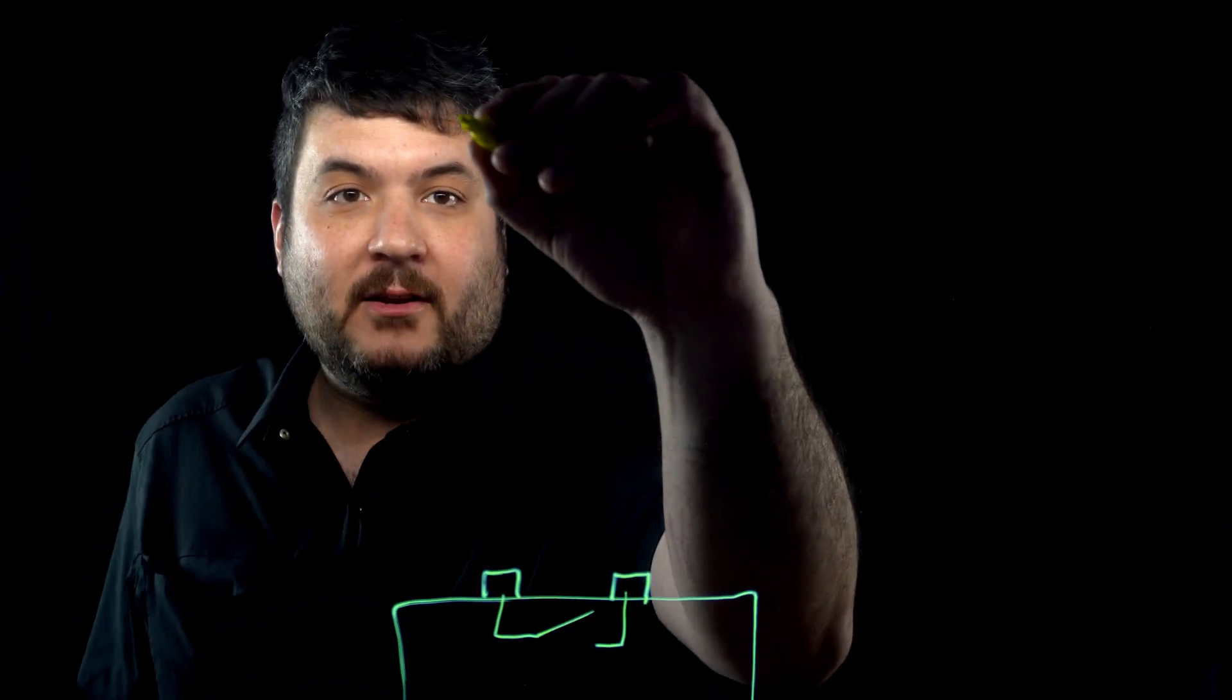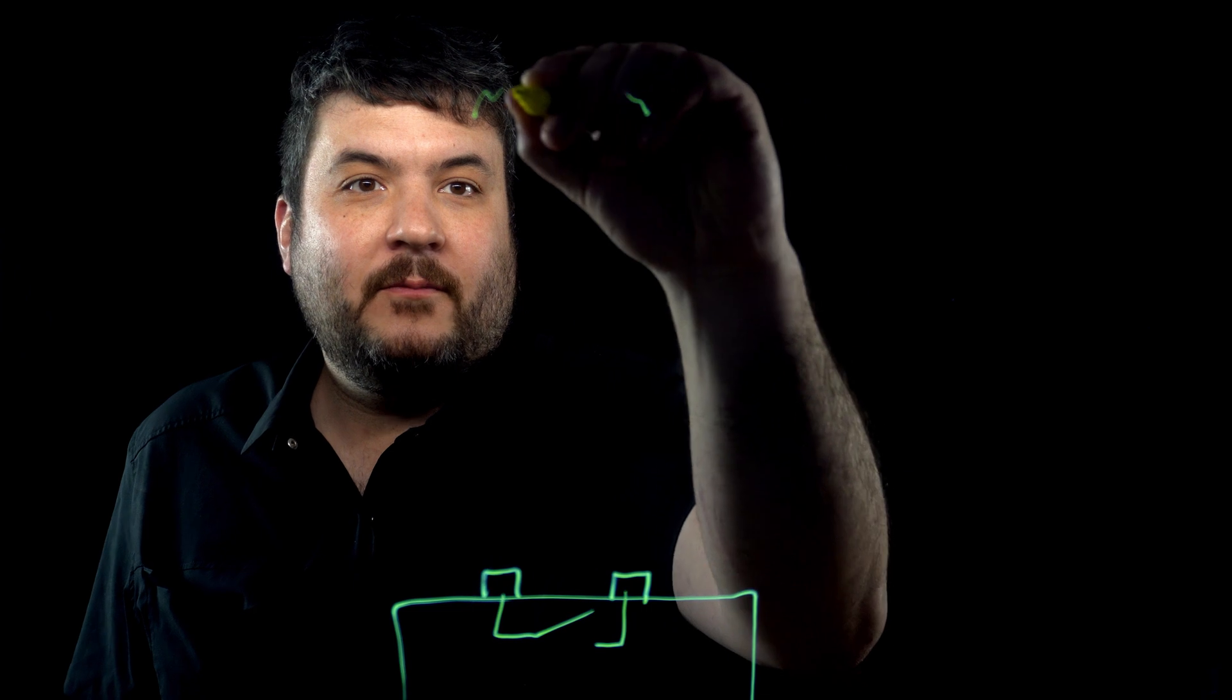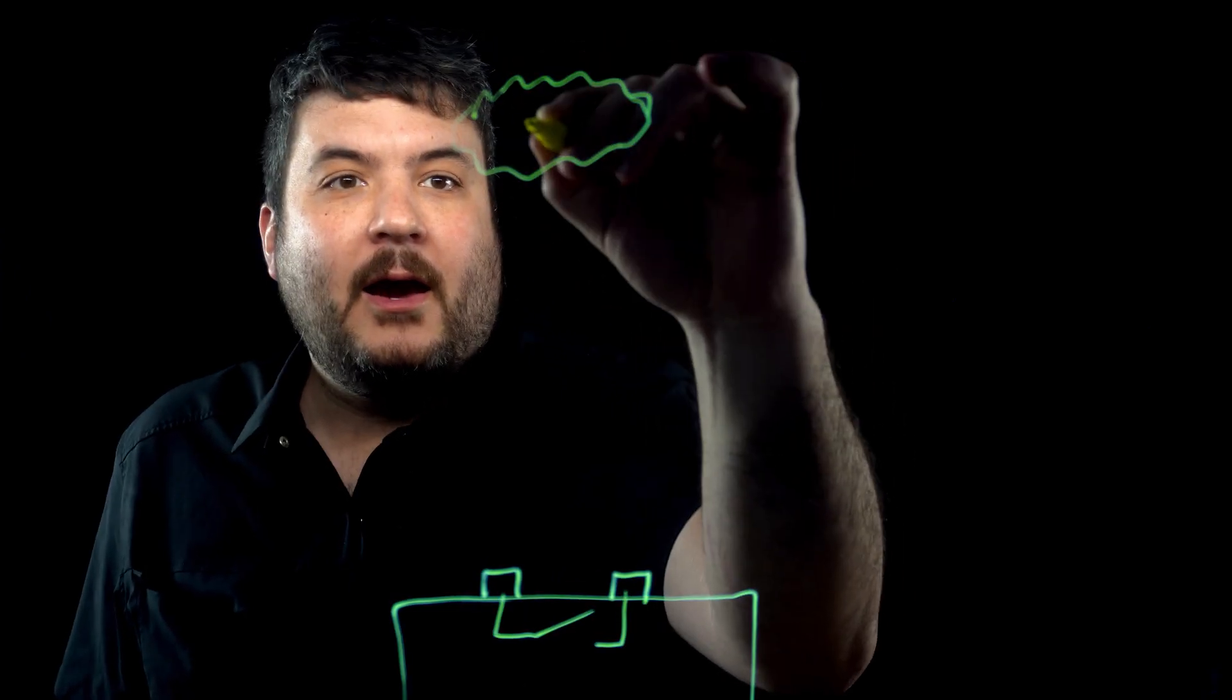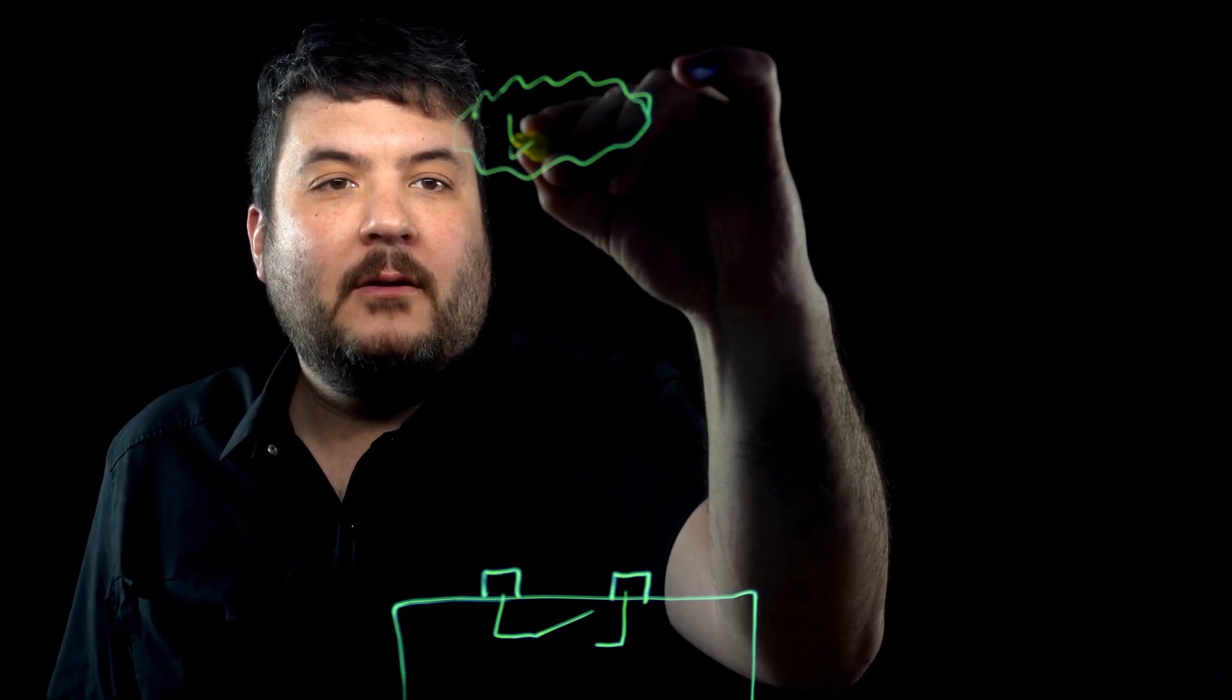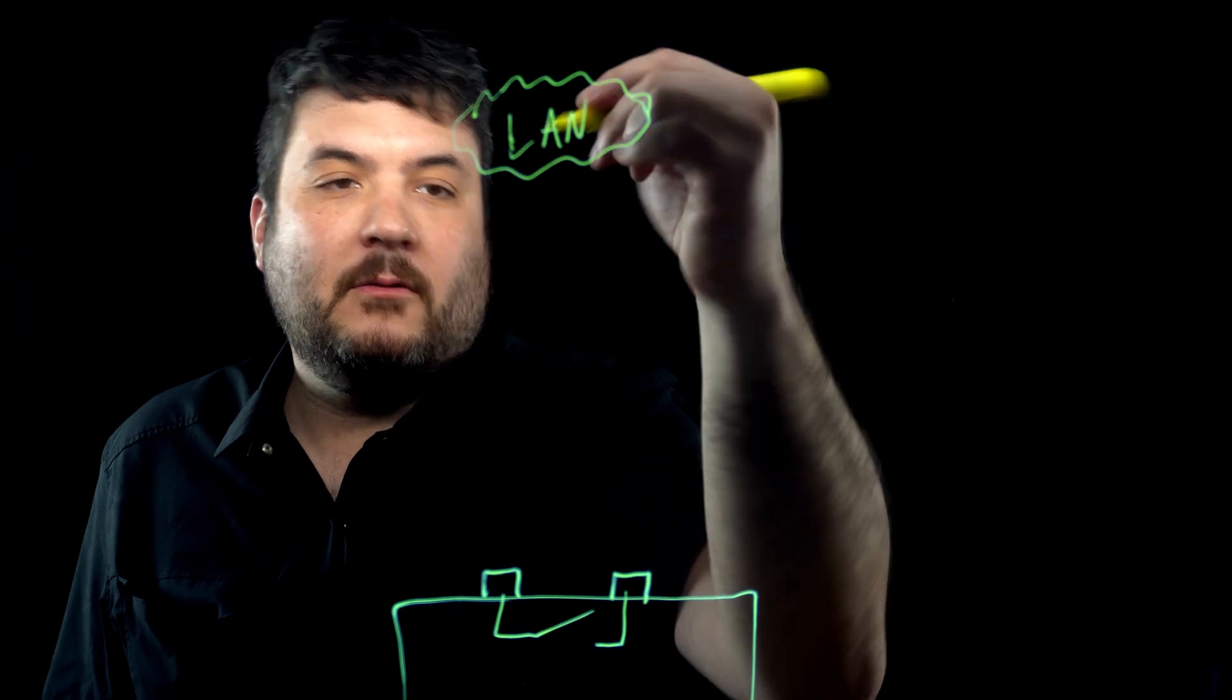It could be a door sensor that breaks the circuit when it opens. It could be a piece of equipment that latches a relay to say something's gone wrong. It could be almost anything. But the question is, that's a simple electrical continuity. How in the world can I send that out over Ethernet or LAN?